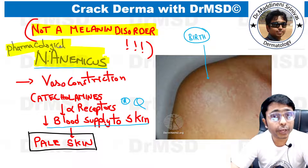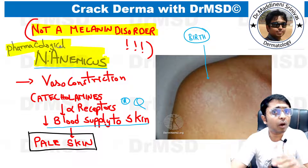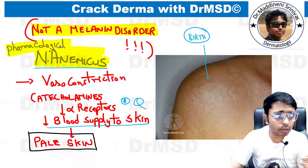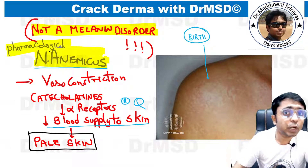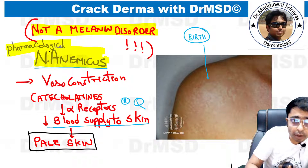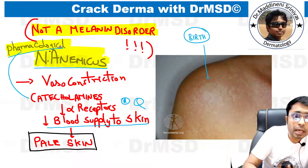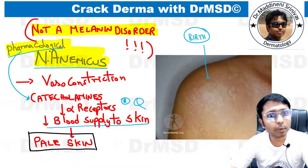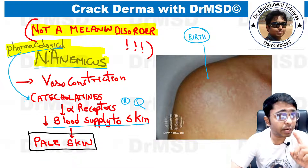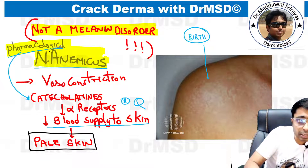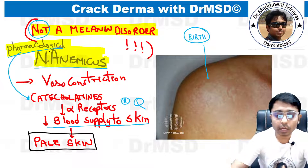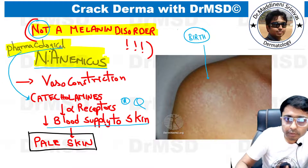This could be an assertion-reason type of question. Essentially, the hypopigmentation of the skin is not due to melanin or its components — it is caused by certain chemicals producing this effect. That is why it is also called pharmacological nevus. This is a very important point to remember: this is not a melanin disorder, and the lesions are seen since birth.